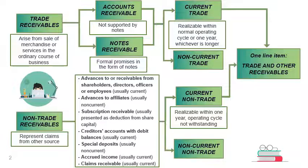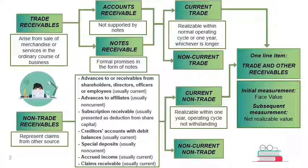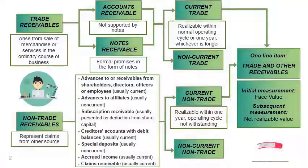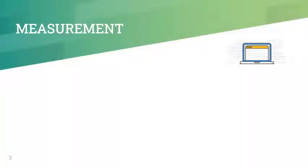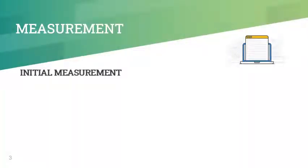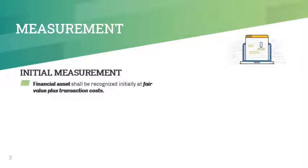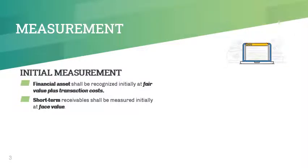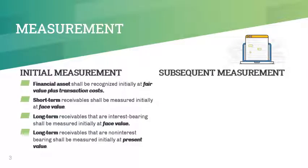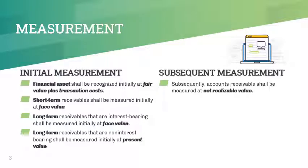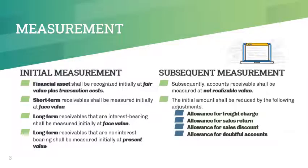Trade and other receivables are initially measured at face value and subsequently measured at net realizable value. PFRS 9 requires financial assets to be recognized initially at fair value plus transaction costs. In the case of trade and other receivables, which are classified as short-term or current, the fair value is simply the face value. Subsequently, trade and other receivables are measured at net realizable value, which is the initial amount net of all allowances.